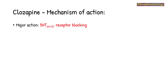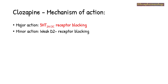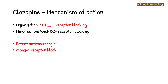The mechanism of action of clozapine involves two actions. The major action is blocking the 5-HT2A and 5-HT2C receptors, and the minor action is weak D2 receptor blocking activity. In addition to blocking 5-HT2A/2C receptors, it also has potent anticholinergic action, alpha-1 receptor blocking action, and H1 receptor blocking action.